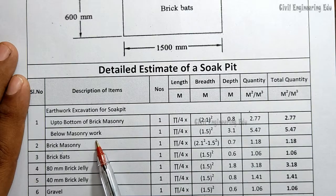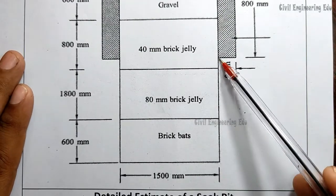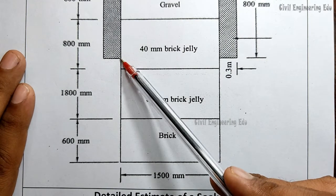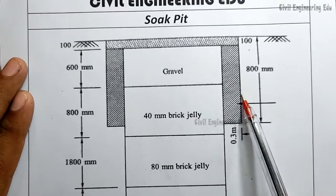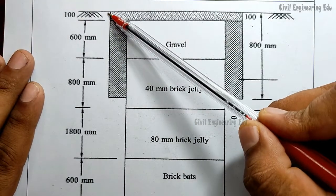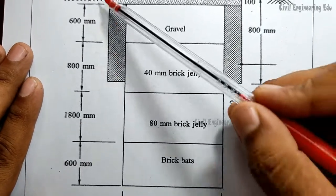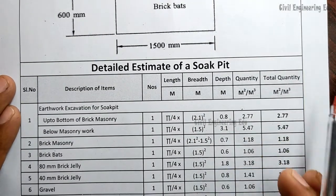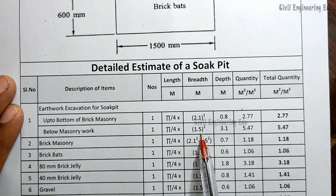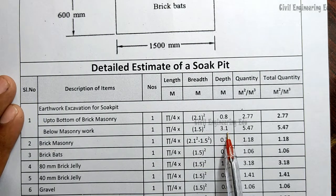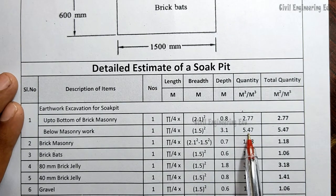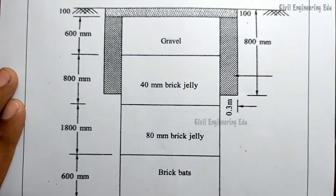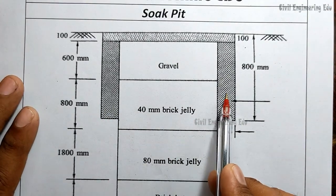For part two — below masonry work — the diameter is 1.5m. The depth is calculated as the total depth minus the part one depth. Total depth minus 0.8m gives 3.1m. So: pi/4 × 1.5² × 3.1 gives the quantity for part two below masonry work. The total excavation quantity comes to 5.47 cubic meters.